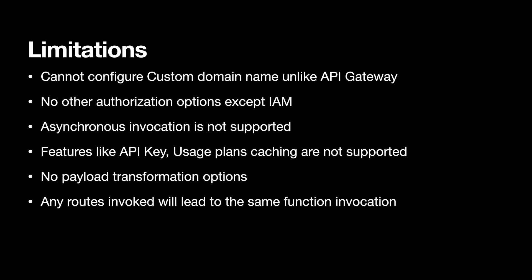Function URL is suitable for single-function microservices with minimalistic functionality. It can also be used to test Lambda functions during R&D without leaving the console. It's also suitable for building simple machine learning inference functions. These are a few of the areas where we can leverage function URLs.